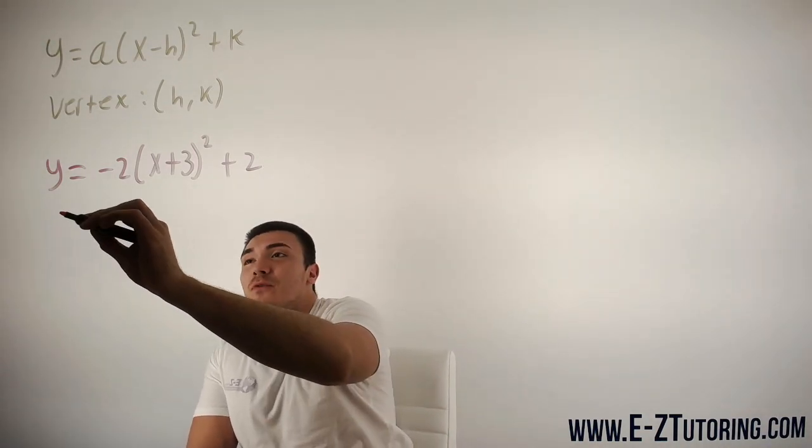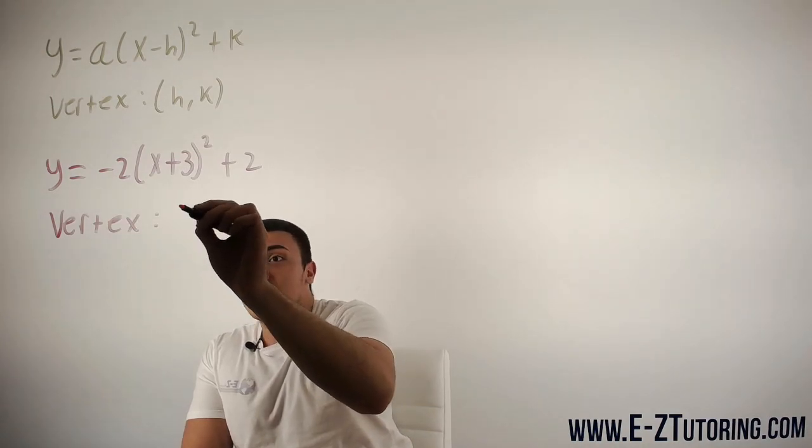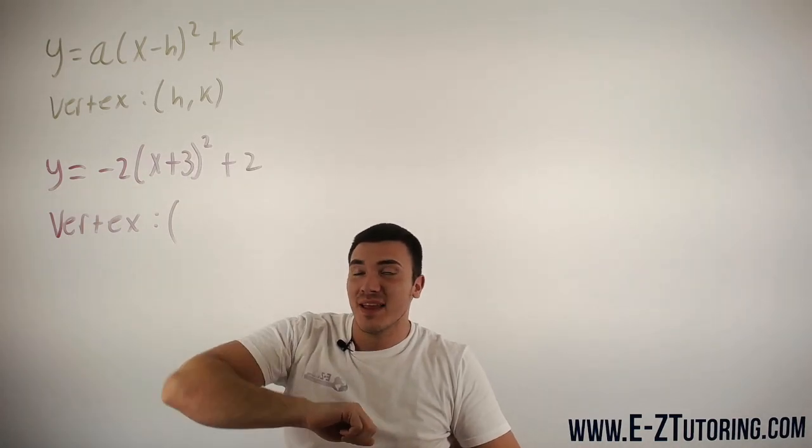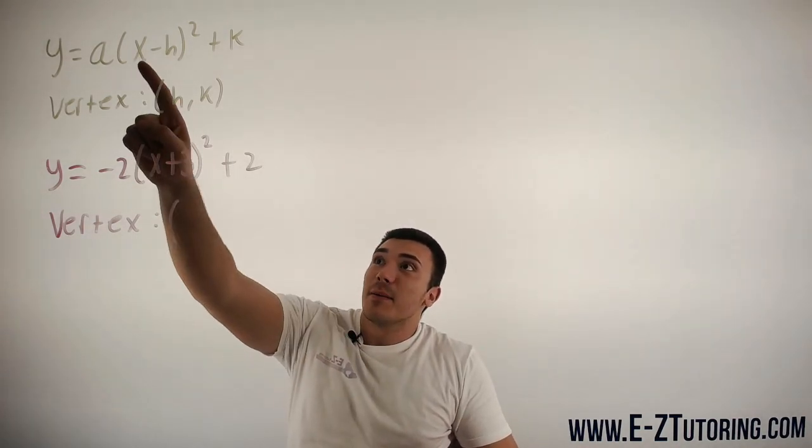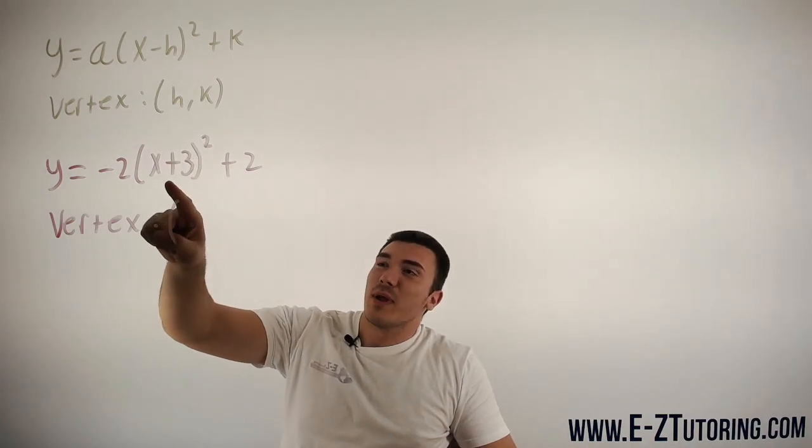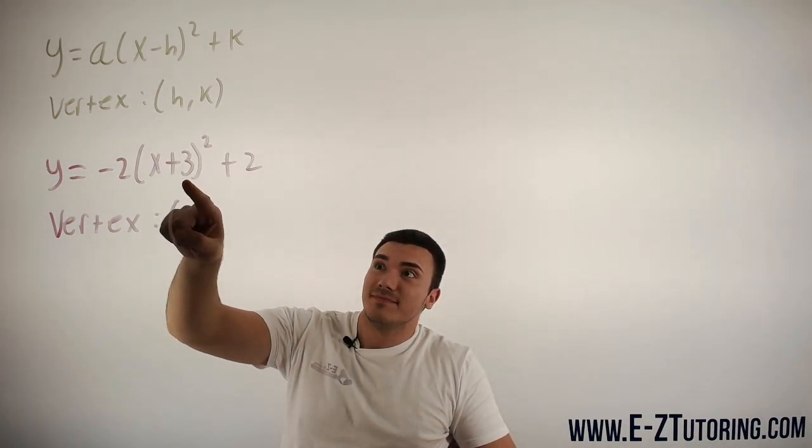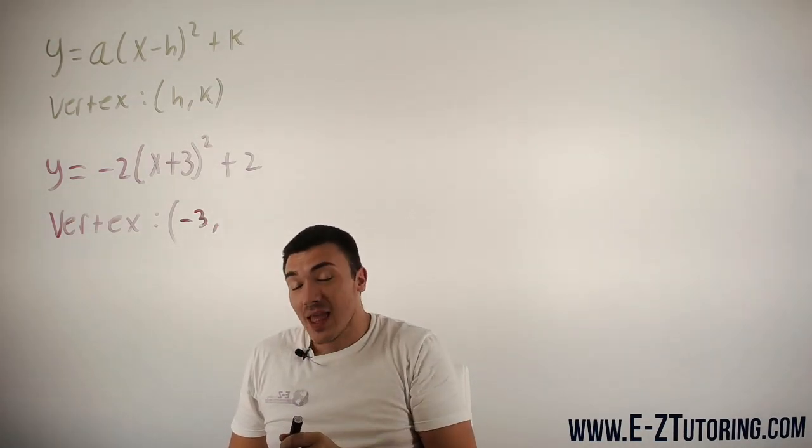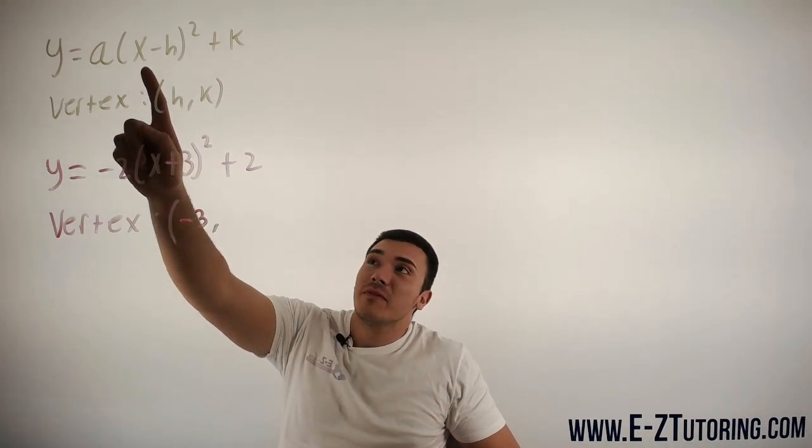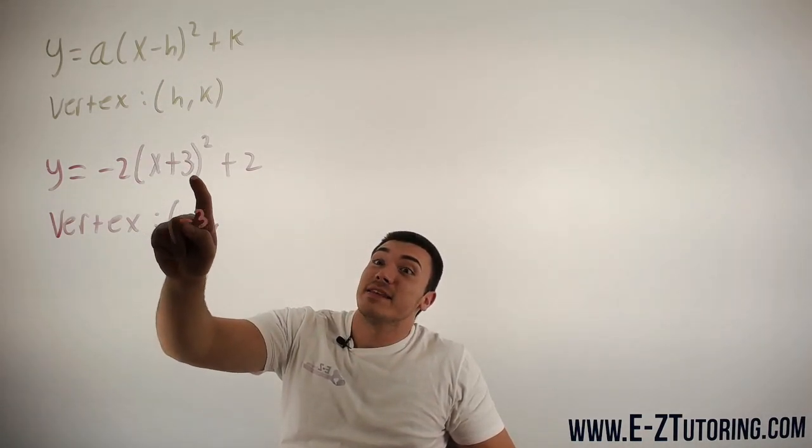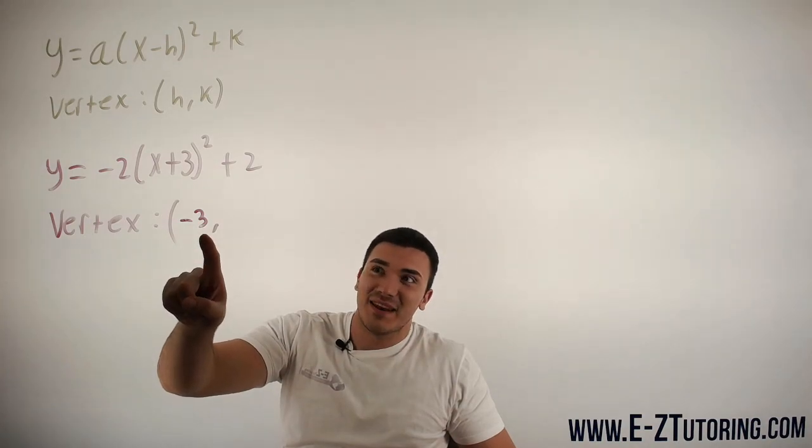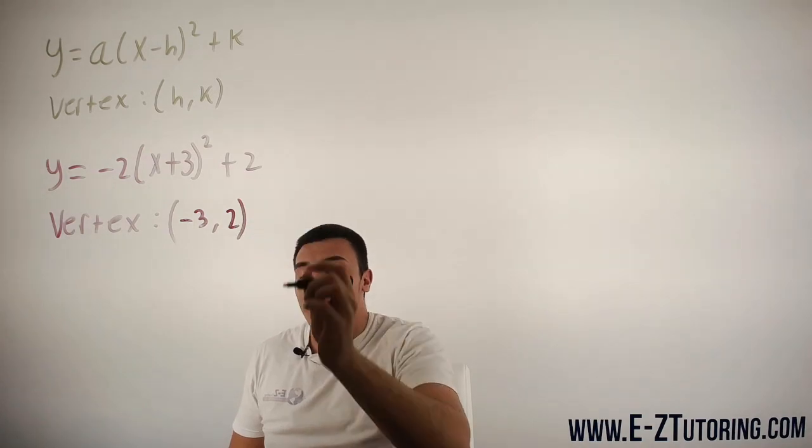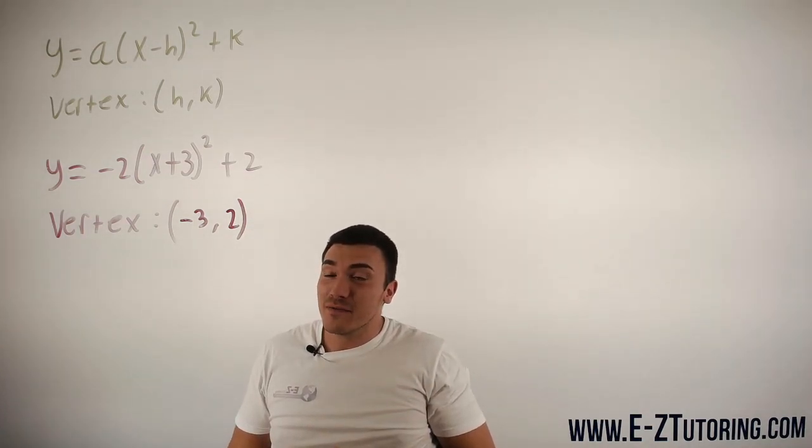From the standard form, the first thing that you want to do is find your vertex. Your vertex is at h comma k. So we have x minus h in the formula. Over here we have x plus 3. The signs are different, therefore our h is negative 3. If you have trouble seeing it, you can see how this is really x minus negative 3. And then k is just 2. So your first step is to find your vertex.